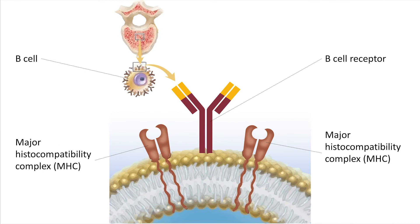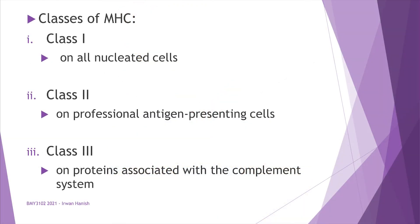On the B cell surface, the antigen-specific receptor is called the B cell receptor, with an adjacent MHC marker, usually class II. MHCs have three distinct classes found in different cell types: class I on all nucleated cells, class II on professional antigen-presenting cells including B cells, and class III on proteins associated with the complement system.